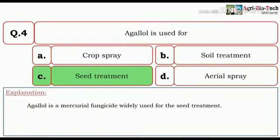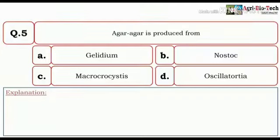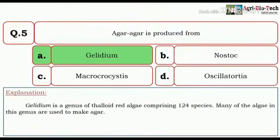Agar is produced from Gelidium and Nostoc. So here the correct answer is Gelidium. Gelidium is a genus of thalloid red algae comprising 124 species. Many of the algae in this genus are used to make agar.